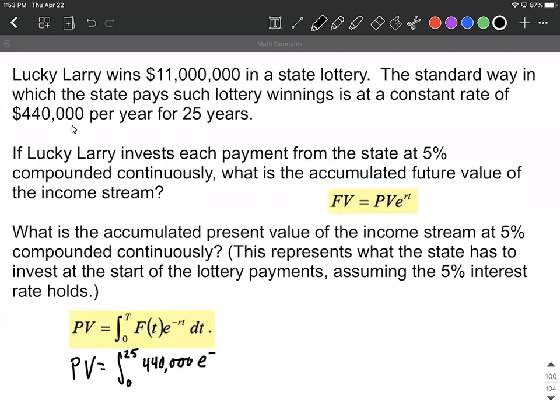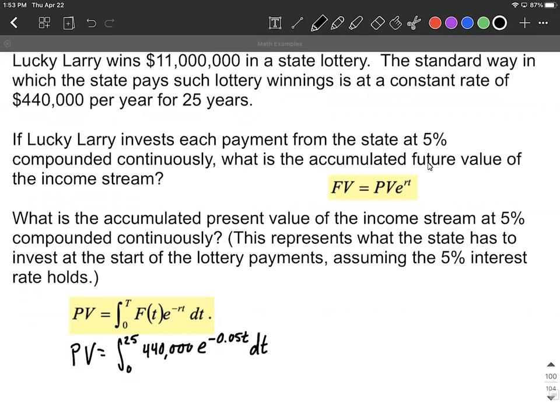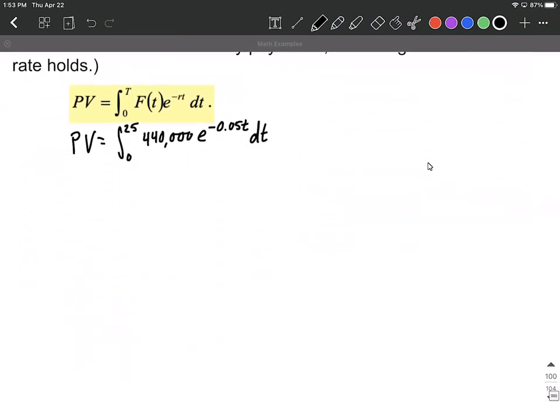Then we have e raised to the negative. We're going to use our 5%, so 0.05t dt. We've converted from a percent to a decimal. Now let's work this out. I'm going to move the constant out in front, so the 440,000 can move out in front of the integral from 0 to 25, e^(-0.05t) dt. Now what you should notice on this is we have e to a power, but it's not just e to the t power. Instead, we have a function within the e to the power function. So you're going to see this on every one of these present value formulas that you're going to have to do a quick substitution.